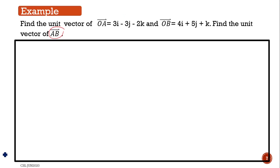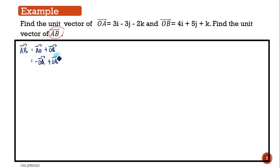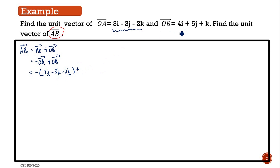First of all, in order to find the unit vector of AB, we have to find vector AB first. Vector AB equals AO plus OB, which equals negative OA plus OB. So that is negative of (3i minus 3j minus 2k) plus (4i plus 5j plus k).